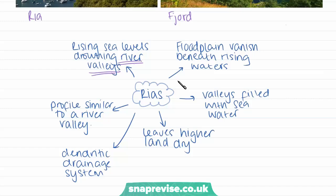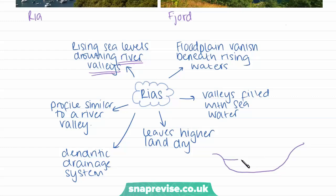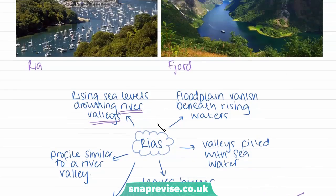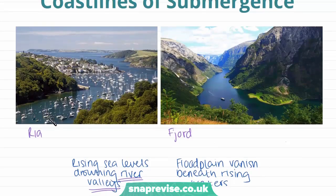When a river valley emerging onto a coastline is flooded, the floodplain vanishes beneath the rising waters and only the higher valley sides remain visible. The river valley is then filled with seawater, creating what is called a dendritic drainage system. The cross-section looks very much like a river valley — a shallow profile filled with seawater, but not extending as far up the course of the river as a normal river would. This photograph shows a ría in Cornwall, where the river originally flowed through the middle but has been flooded by seawater as sea levels rose, leaving higher pieces of land unsubmerged.